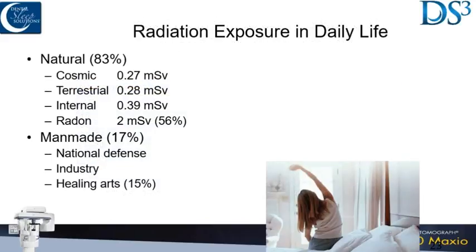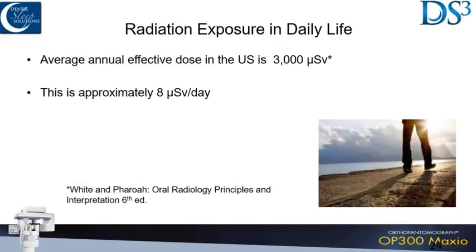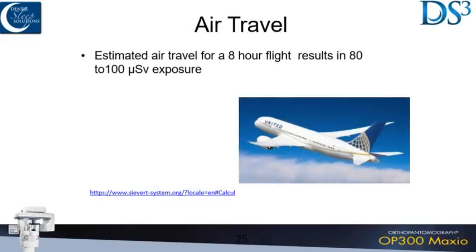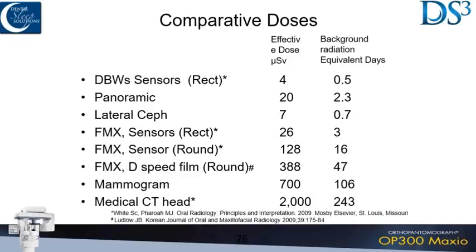The vast majority of the radiation any of us get is natural — 83% versus 17% from artificial sources. Eight micro sieverts is what you get just from sitting in your house, walking around on earth each day. If you fly, you get 80 to 100 micro sieverts. An eight-hour flight can give you that amount. You can go to a website and enter where you're going, and it'll calculate the exposure you're getting.